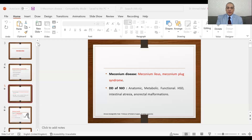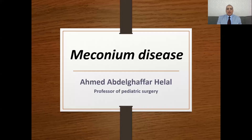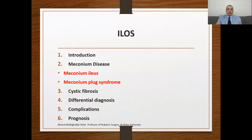Today we will present a new subject on pediatric surgery, which is meconium disease. Meconium disease is very important for all pediatric surgeons and its associated cystic fibrosis disease. Our ILOs will be: what is meconium disease, what is cystic fibrosis, what is the differential diagnosis of obstruction, what are the complications, and what about the prognosis of such infant and child.